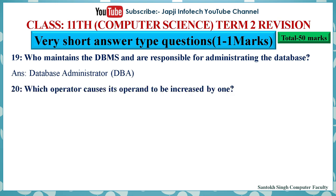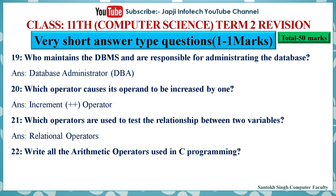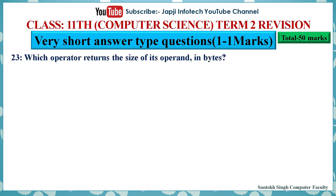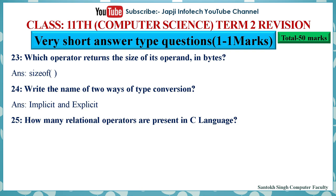20. The operator that causes its operand to be increased by one is the increment operator. 21. Operators used to test the relationship between two variables are relational operators. 22. The arithmetic operators used in C programming are +, -, *, /, and %. 23. The operator that returns the size of its operand in bytes is the sizeof operator. 24. The two ways of type conversion are implicit and explicit conversion. 25. There are six relational operators present in C language.